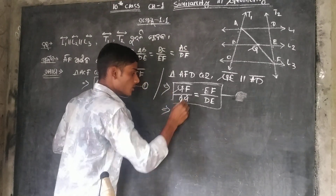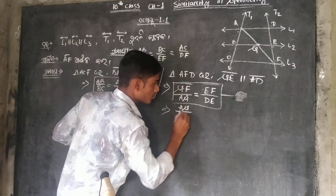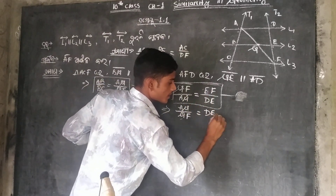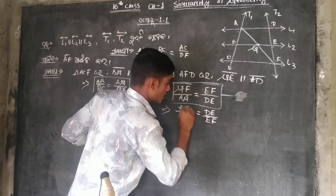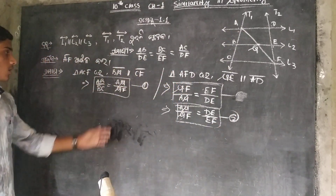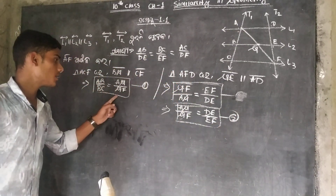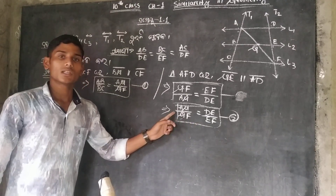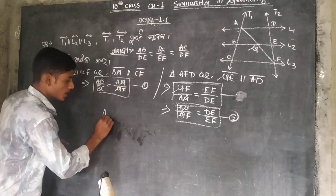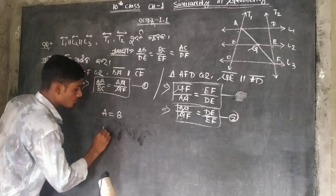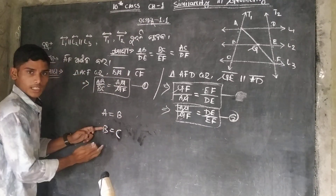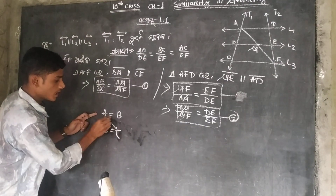Where does GF by GF stand? So GF equals D by EF. We give equation 2. If we give equation 2, which is GF, we will write: A is equal to B, B is equal to C, then B is equal to A is equal to C.